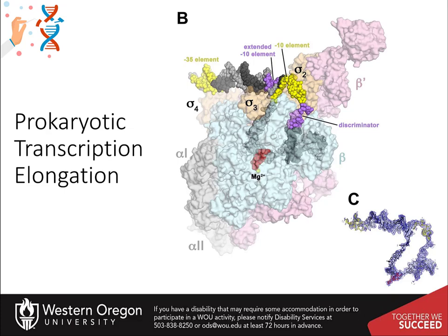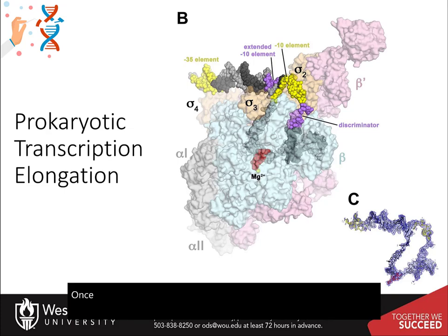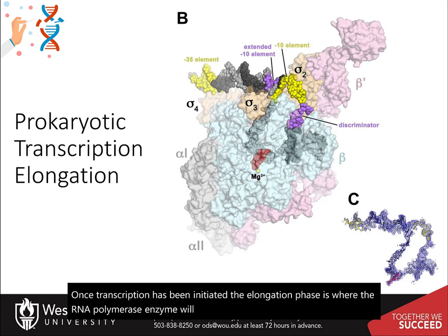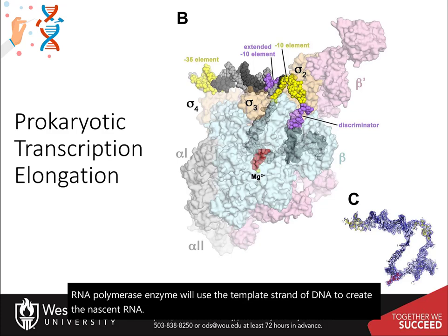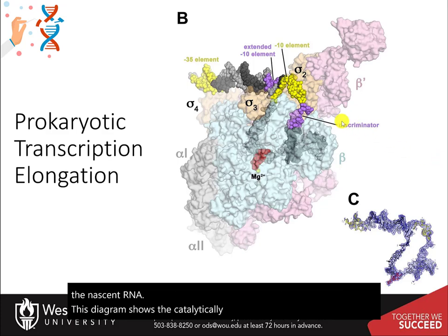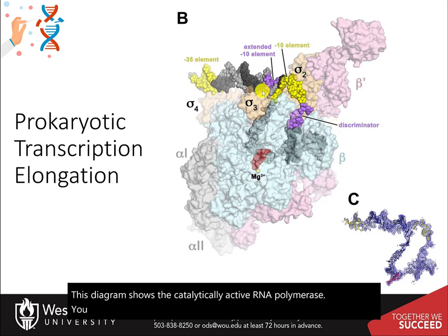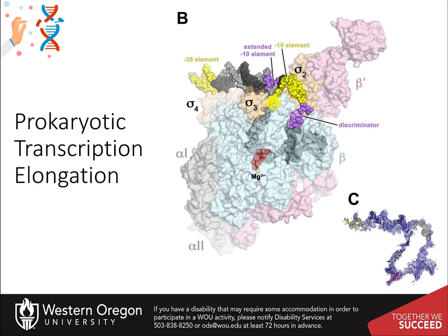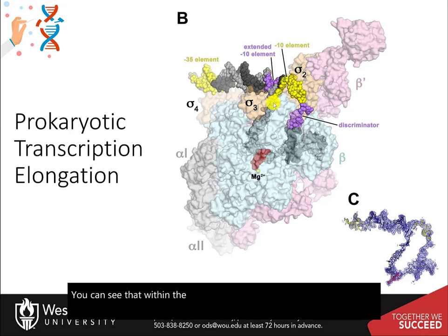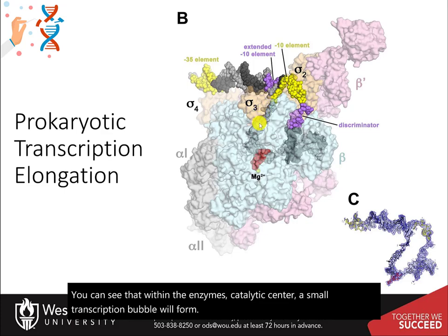Once transcription has been initiated, the elongation phase is where the RNA polymerase enzyme will use the template strand of DNA to create the nascent RNA. This diagram shows the catalytically active RNA polymerase. You can see that within the enzyme's catalytic center, a small transcription bubble will form where the DNA helix is unwound.